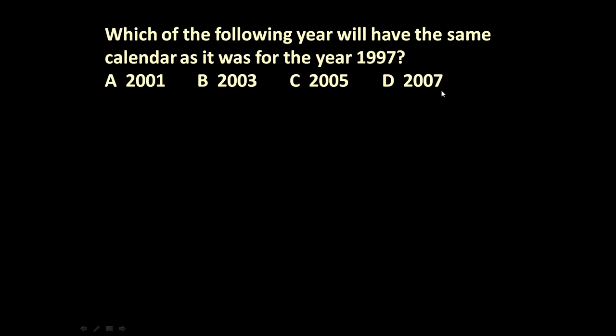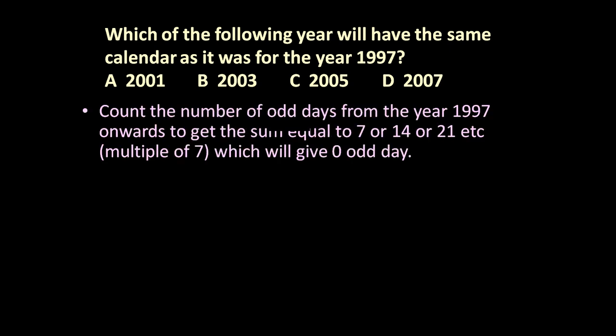To answer such questions, let us count the number of odd days from the year 1997 onwards to get a sum equal to 7, or 14, or 21, etc. - multiples of 7 which will give 0 odd days. We have explained in earlier videos how to calculate odd days. Any number of days extra than a week are called odd days.